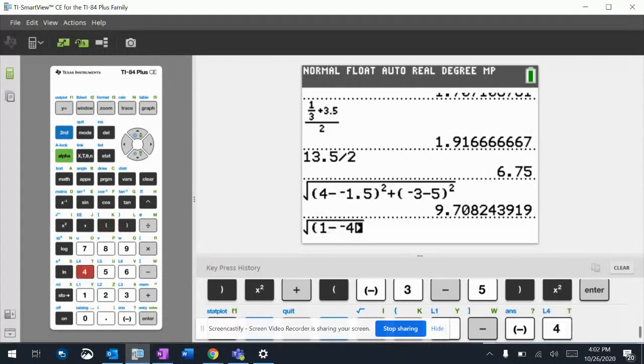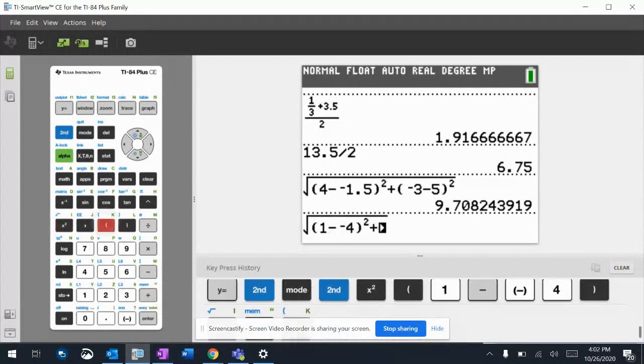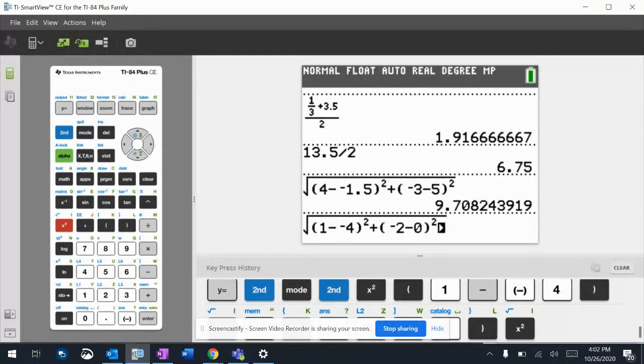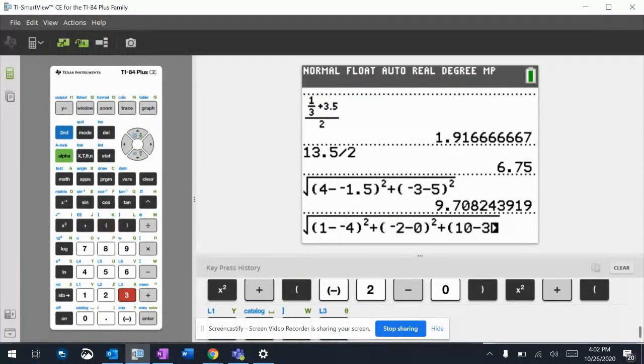So it's 1 minus negative 4 squared plus negative 2 minus 0 squared plus 10 minus 3 squared.